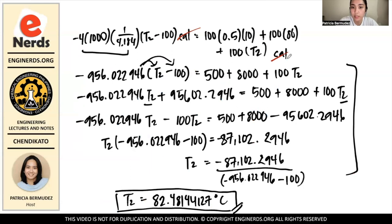Since T1 is in degrees Celsius, T2 will also be in degrees Celsius. But if it were in kelvin, then T2 would also be in kelvin. This is the solution for the problem. I hope you learned a lot from today's video — thank you for listening and stay tuned for the next one.